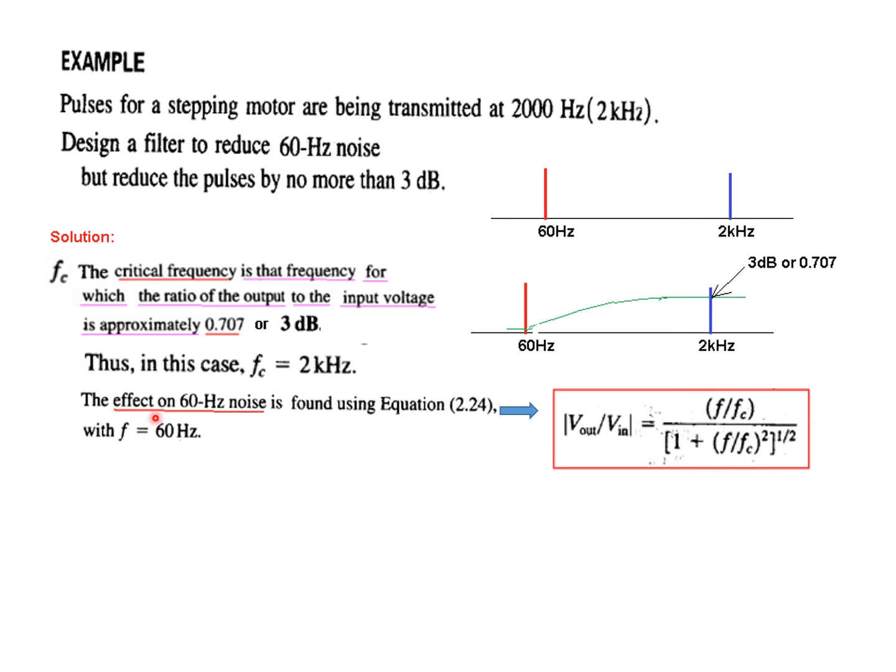Now the effect on 60 Hz noise is found by using this equation, where f is 60 Hz, this is the frequency where we are working, and we have the cutoff frequency. So 60 Hz for f and 2 kHz is for fc.